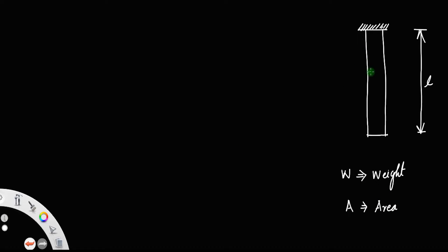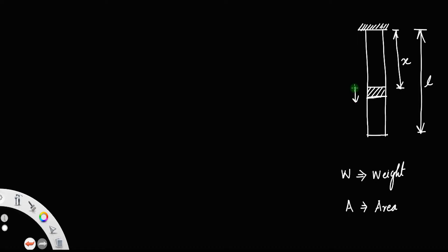Suppose there is an element. Let us consider a section of this rod at a distance x from the fixed point, and let the thickness of the section be dx.